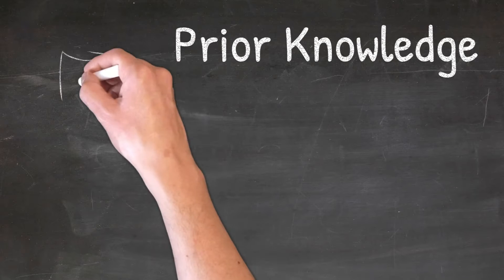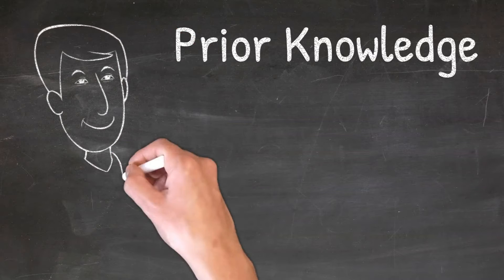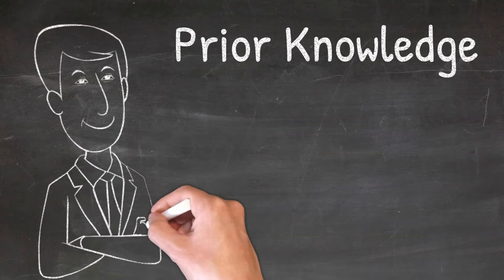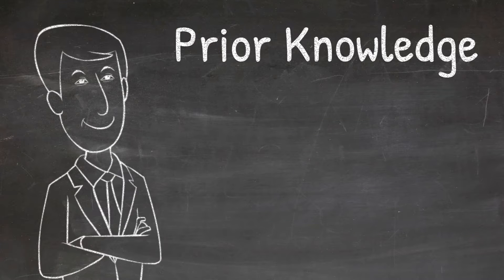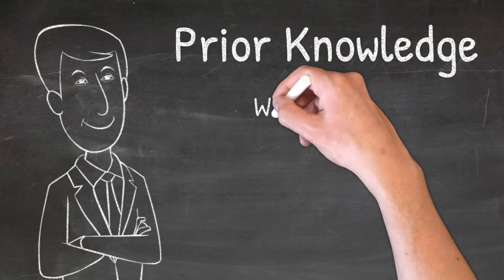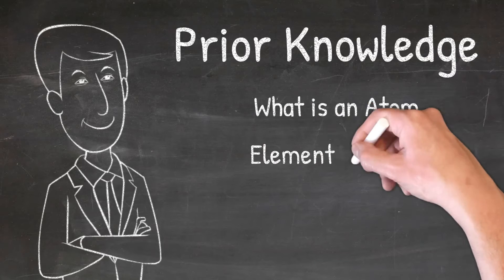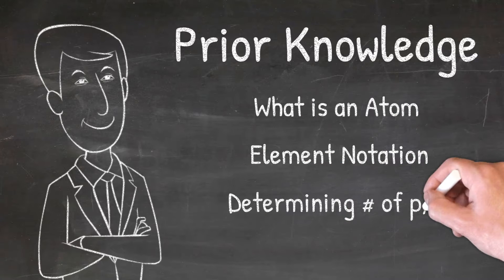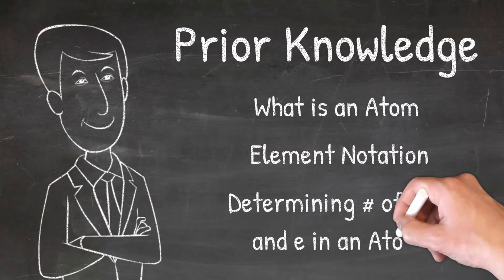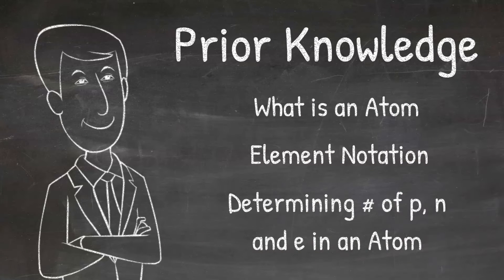In order to understand what an isotope is, there are a few concepts you need to remember from other videos: what is an atom, element notation, and determining the number of protons, neutrons, and electrons in an atom. If you do not remember this information or need a refresher, please check out our videos on all of these topics.